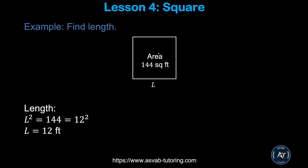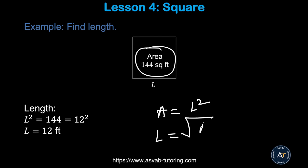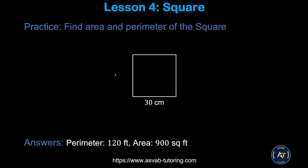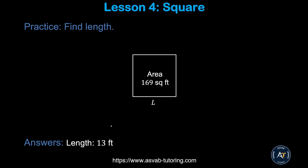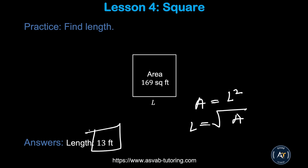If the area is given as 144, you know A equals L squared, so L equals the square root of A. Using that formula you can find L. This is a practice problem — pause the video and try by yourself. Make sure you get perimeter equals 120 feet and area equals 900 square feet. For another practice problem where area is given, use the formula and find the length. In that case, length equals 13 feet.